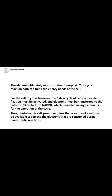The electrons ultimately return to the chlorophyll in a cyclic reaction that fulfills the energy needs of the cell for growth. The Calvin cycle of carbon dioxide fixation must be activated, and electrons are transferred to the cofactor NADP⁺ to form NADPH. This is the second large step, which needs a large amount of energy for the operation of the cycle.